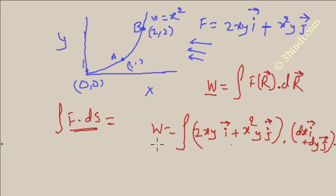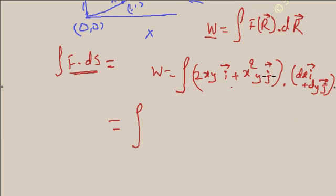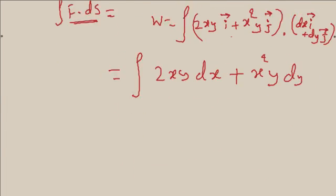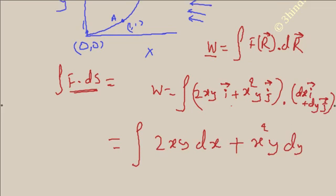If you perform the calculation, you will get the line integral. You know the dot multiplication. If you multiply this vector with this vector with dot multiplication, you will get answer twice xy multiplied by dx, twice xy dx, plus x square y dy. And you are also required to find out the range.